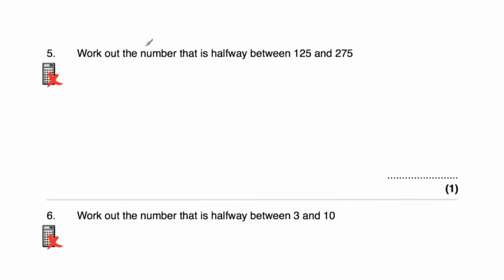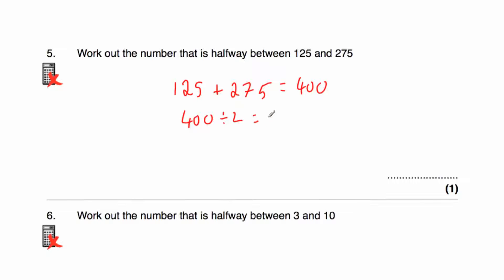Question five says: work out the number that's halfway between 125 and 275. Adding 125 and 275: 275 plus 25 is 300, and another 100 is 400. So adding them gives 400, and 400 divided by 2 is equal to 200. The number halfway between 125 and 275 is 200. Check: from 125 to 200 we add 75, and adding another 75 gives 275.